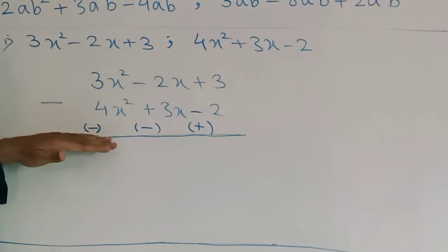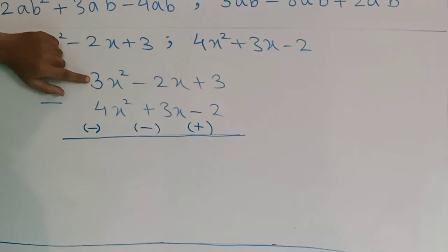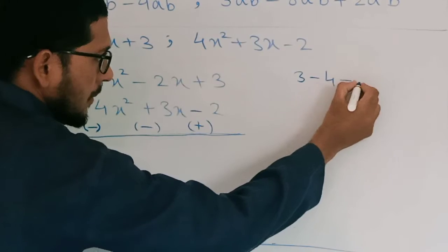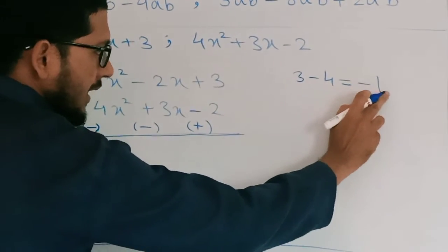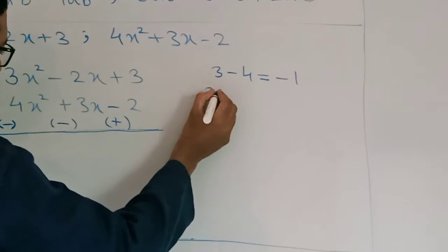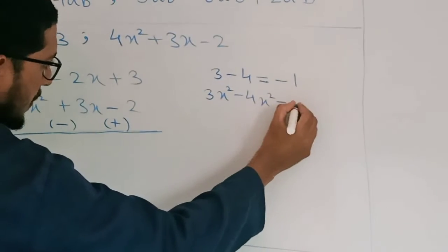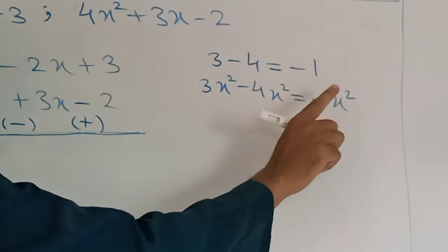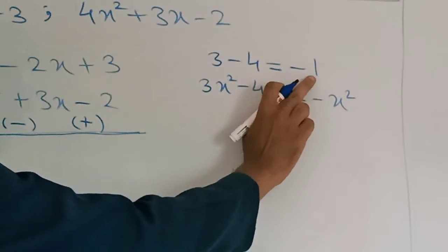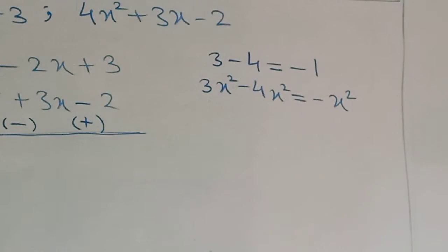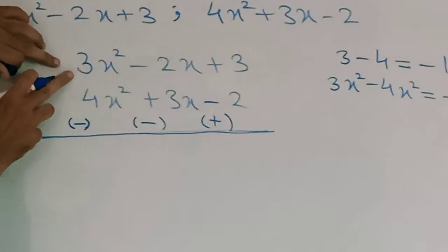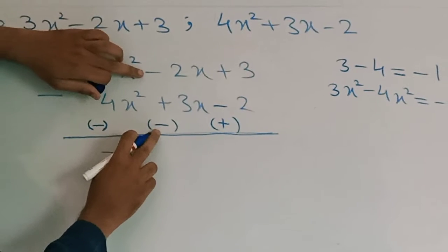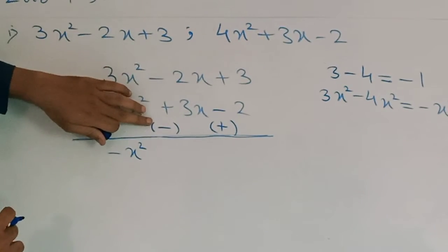Now we consider the first sign and the changed sign together. 3 has plus sign and 4 now has minus sign, so 3 minus 4 gives minus 1 — therefore 3x² minus 4x² gives minus x². After that, minus 2x and minus 3x: minus minus is plus, so we add 2 and 3, giving minus 5x overall.